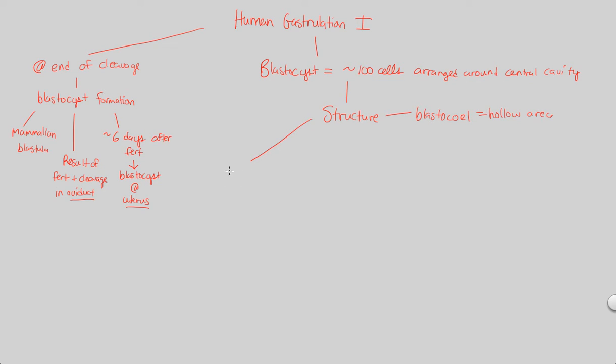There's going to be an area called the trophoblast. That's a part of the blastocyst in human gastrulation that's going to be important. The trophoblast, from a definition standpoint, is an outer single layer of cells on this structure.